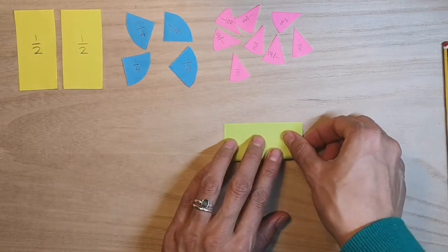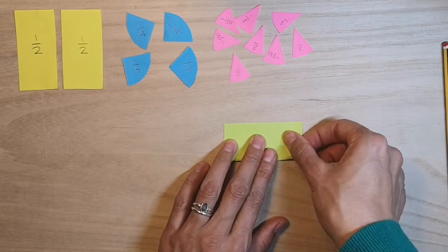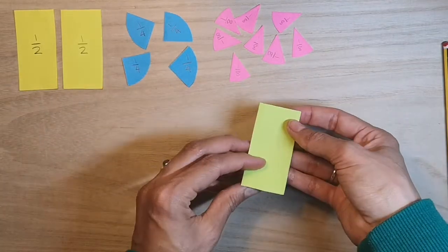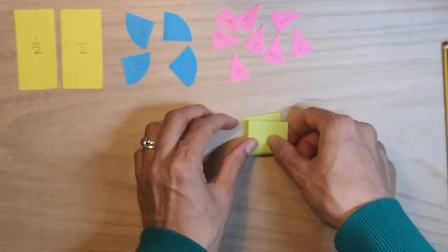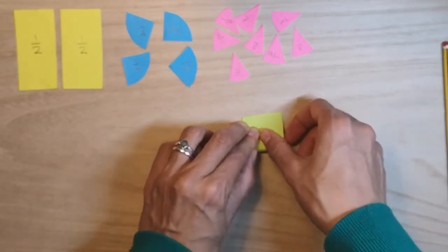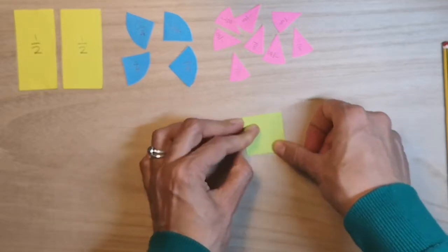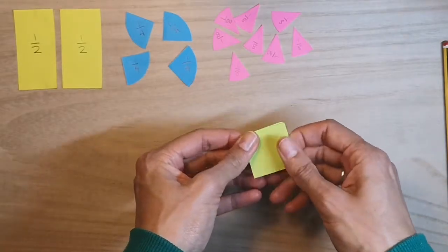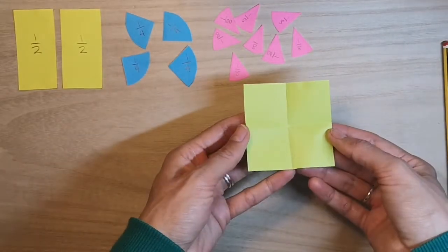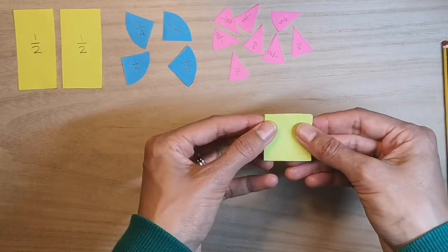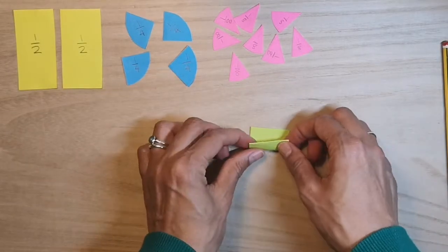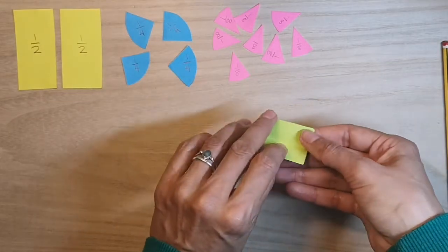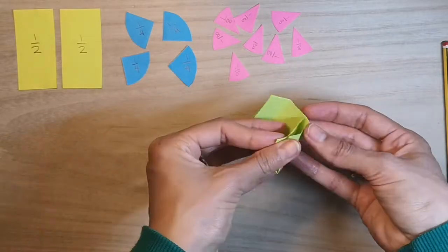When I fold this, I'm going to fold it in half. I'm going to fold it in half again. So now this should give me quarters. And I'm going to fold them in half again. Now this should give me eighths.